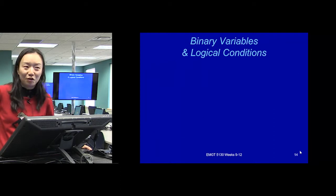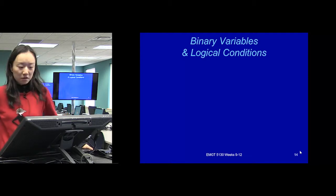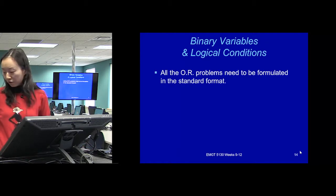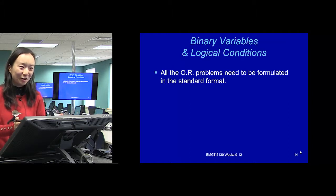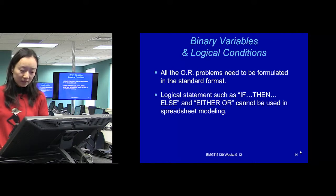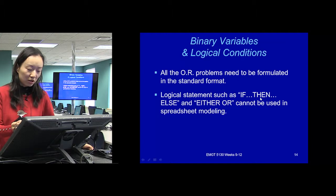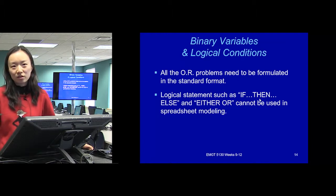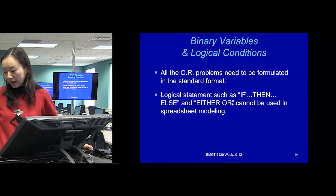Binary variables are even more useful than just turning a value on or off. All OR problems need to be formulated in a standard format — you cannot just put a statement there. In some situations we have constraints that represent statements such as 'if this happens then this, else another' or either-or situations. We can't just write those statements as a constraint. Binary variables will help us formulate those kinds of statements. That's why I love ILP.